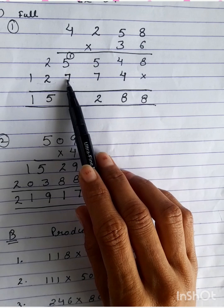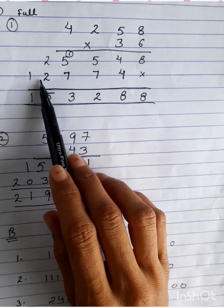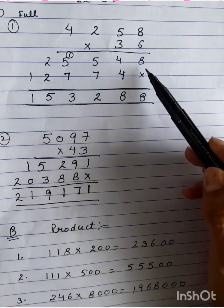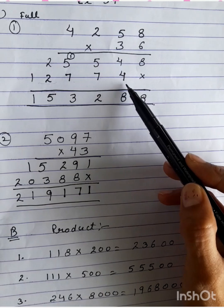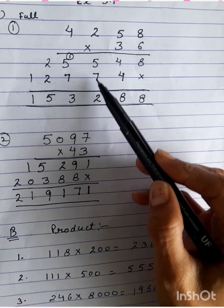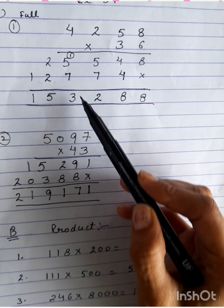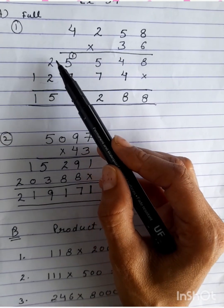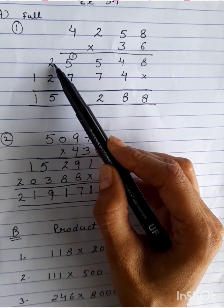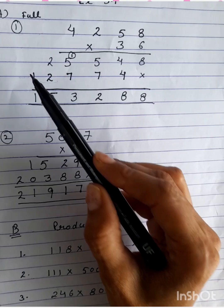3 times 2 is 6 plus 1 is 7 again. 3 times 4 is 12. Then we will add these all numbers. This is 8, 4 plus 4 is 8, 5 plus 7 is 12. 5 plus 7 is 12 plus 1 is 13, 1 carry again. 1 plus 2 is 3, 3 plus 2 is 5, and then 1.